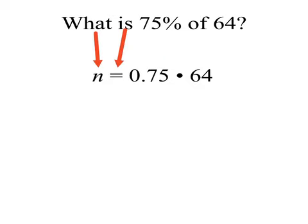We change the 75% into a decimal. The word of, in this case, means multiply as it does in many situations. And the 64 stays the same. And now we have an equation. n, or we could say a number is equal to 0.75 times 64. You can do it with pencil and paper, or you can get out your calculator, but your answer will be 48. So we can now say that 48 is 75% of 64.